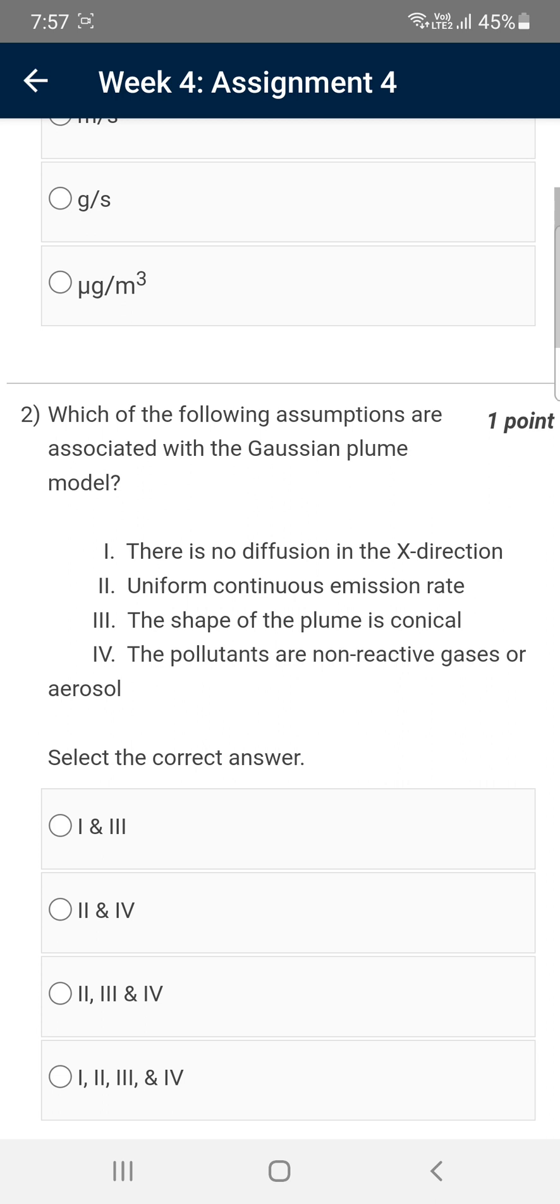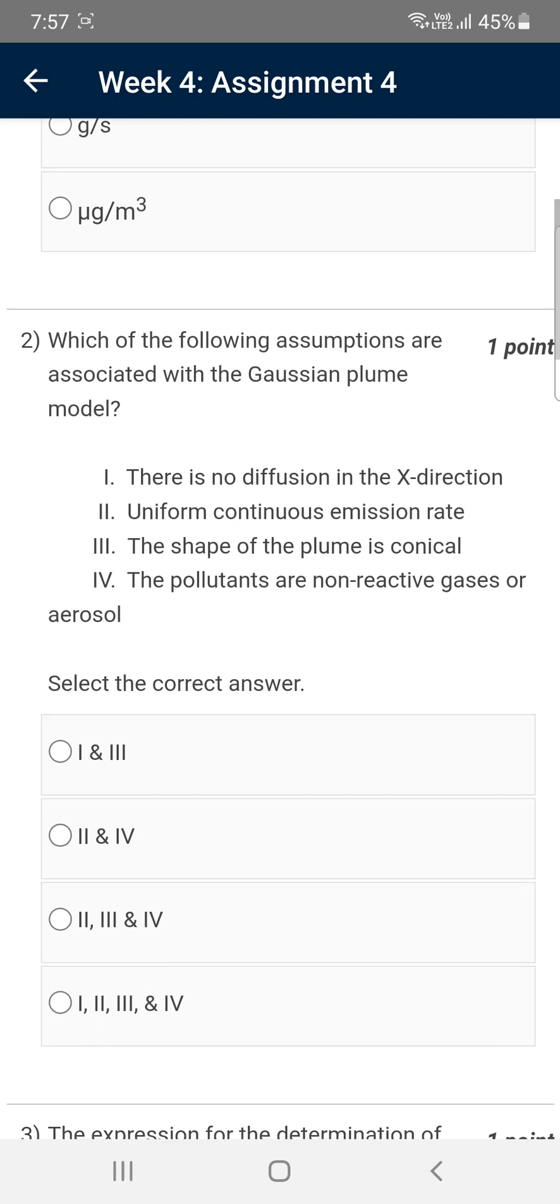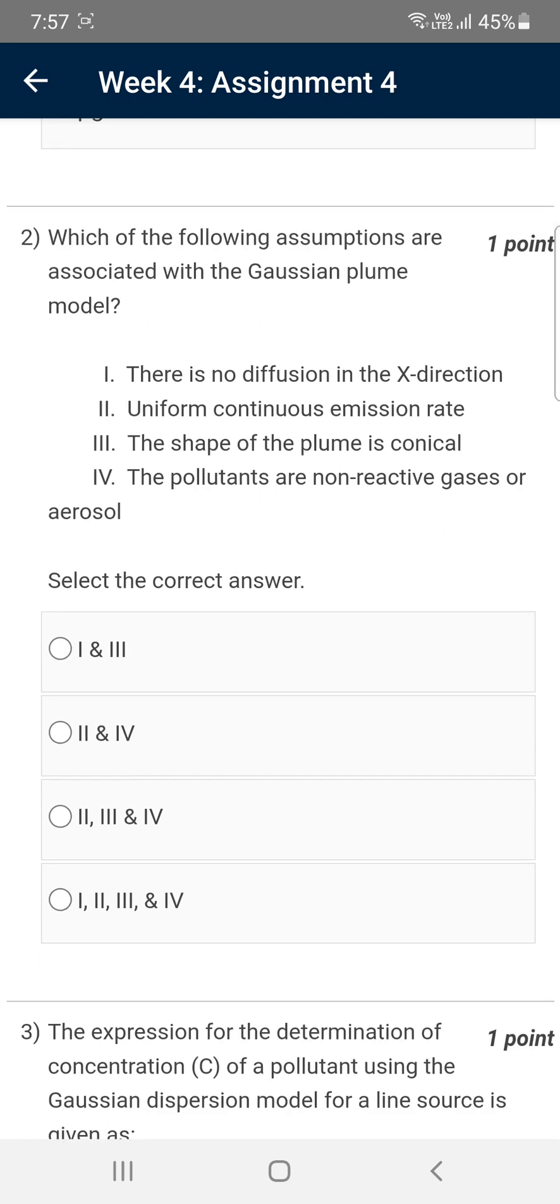Moving on to the second one: Which of the following assumptions are associated with the Gaussian plume model? They give four statements, so the answer is every statement is correct. That means one, two, three, and four, that is the fourth option.